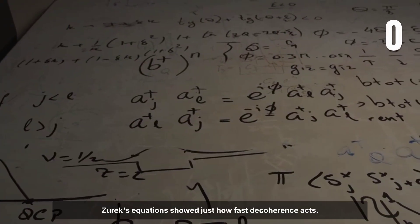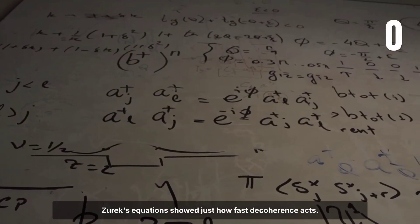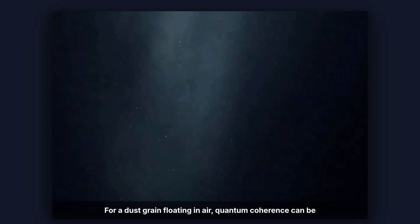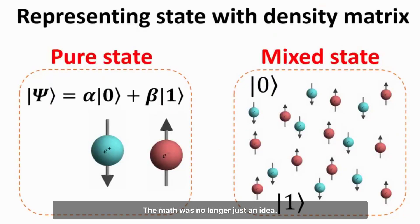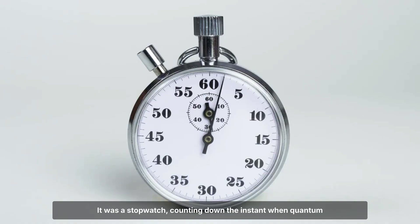Zurek's equations showed just how fast decoherence acts. For a dust grain floating in air, quantum coherence can be lost in less than a billionth of a billionth of a second. The math was no longer just an idea. It was a stopwatch, counting down the instant when quantum choices die.